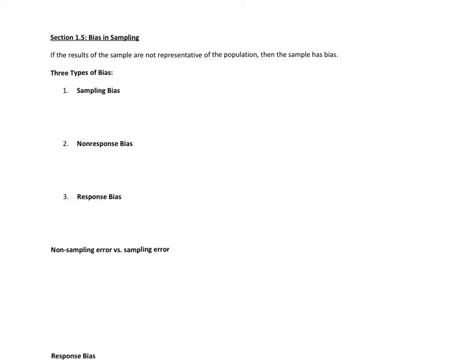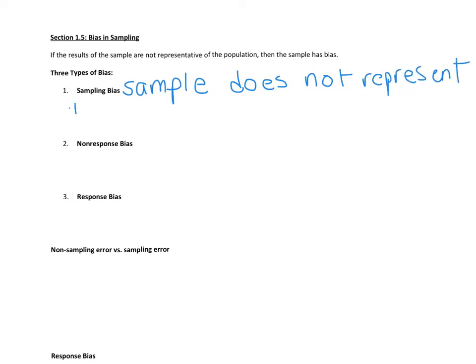Sampling bias is when the sample does not represent the population. That happens when our samples aren't random. We like random samples because they're more likely to produce a sample that looks like the population. Another word for sampling bias is a convenient sample — if we have a bad sampling method, then we have sampling bias.